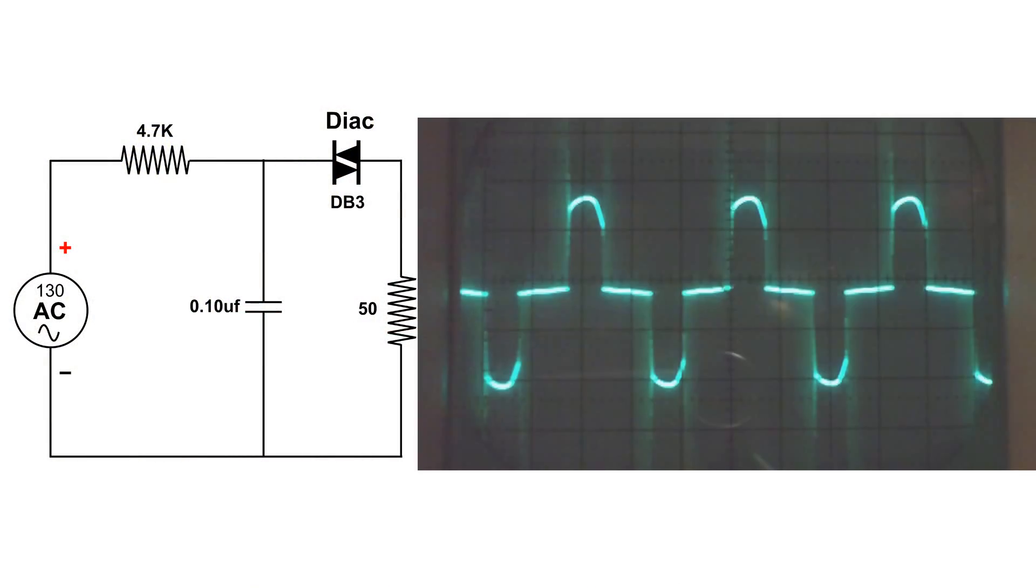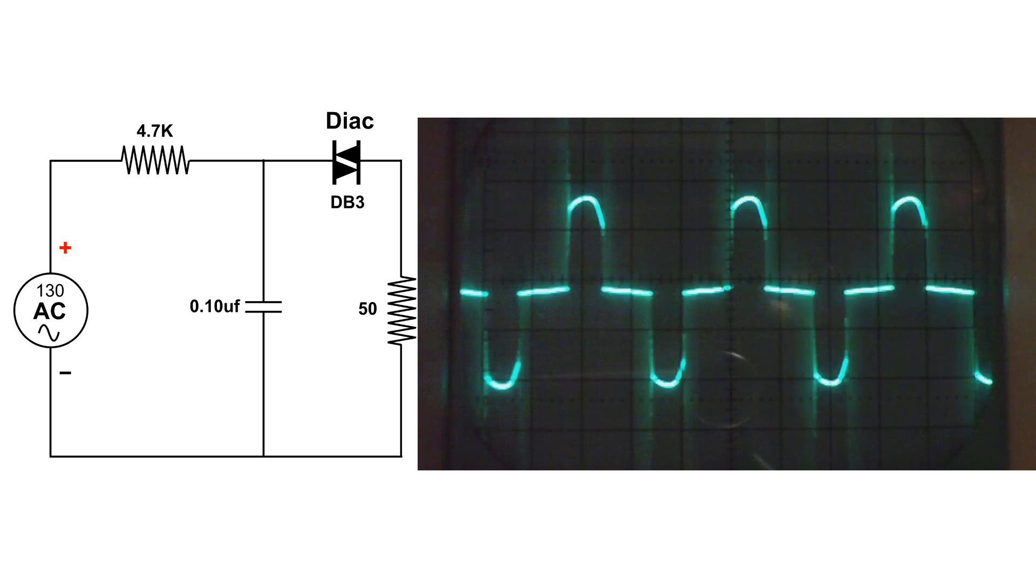Now I have captured the trace across that 50 ohm resistor, and remember we've got 1.455 volts across that resistor. And at this point, the DIAC has not fired. It's off.